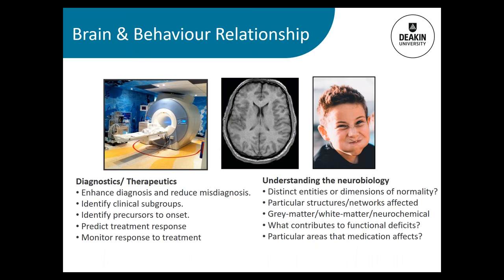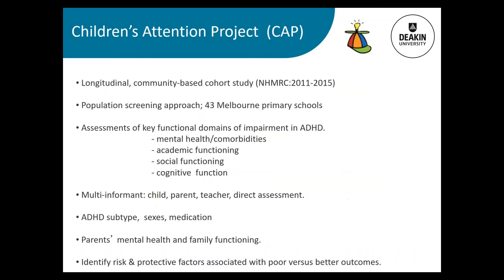At a research level, neuroimaging is being used on a group level to try and predict whether individuals will respond to treatment, though that's not being used clinically yet. What we can do is use it to understand the neurobiology underlying these disorders — whether it's a distinct entity or a dimension across normality, identify particular structures or networks affected, whether it's in the gray matter or white matter, and what contributes to the functional deficits we're seeing. Now I'll introduce the Children's Attention Project, a community-based longitudinal cohort of children we've been following.